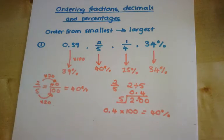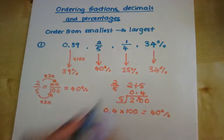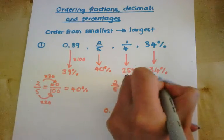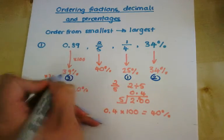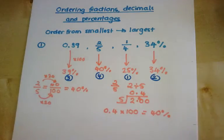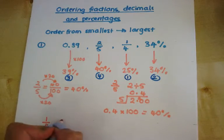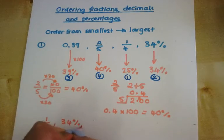I then like to number them in order. So the smallest is 25%, followed by 34%, then 39%, then 40%. And then when you write your answer, write the original ones in. So a quarter, 34%, 0.39, and two fifths.